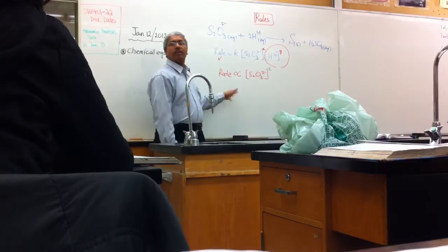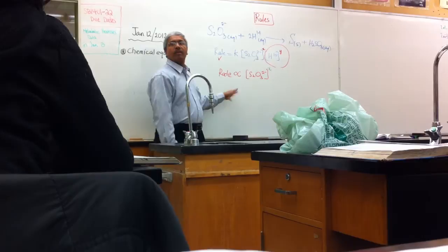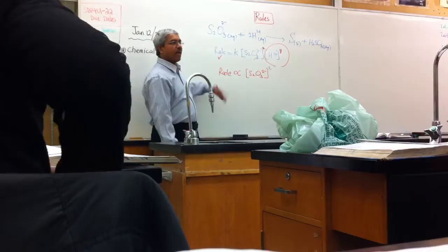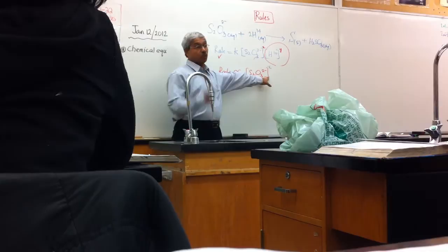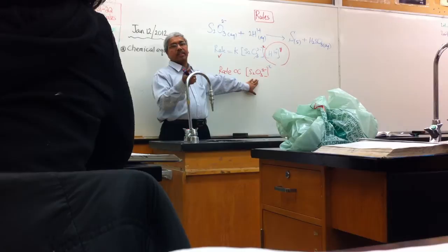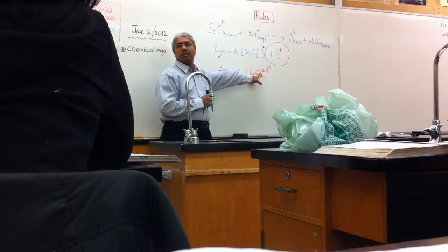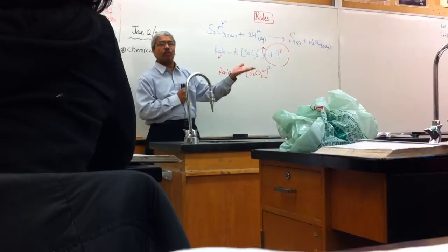So now these are the two quantities changing. Now we have to fix the relationship. If the rate is doubling when you double the concentration, what is the value of X? That is one. If you double the concentration and the rate is doubling, X is one. If you double the concentration and the rate is four times faster, X is two. That's a simple relationship.